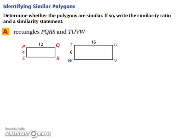Let's identify similar polygons. Determine whether the polygons are similar. If so, write the similarity ratio and a similarity statement. We have rectangles PQRS and TUVW. Well, since they're both rectangles, we know that all their angles are 90 degrees.